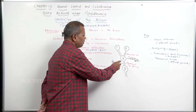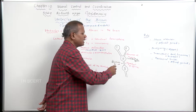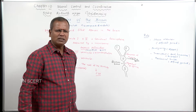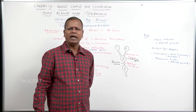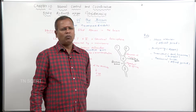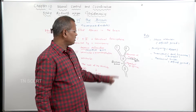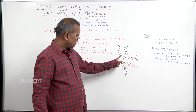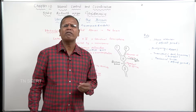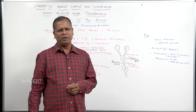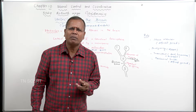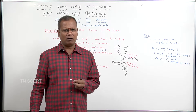The third ventricle is present in the diencephalon. The third ventricle is seen in the diencephalon part. The hind part of the prosencephalon becomes the diencephalon.